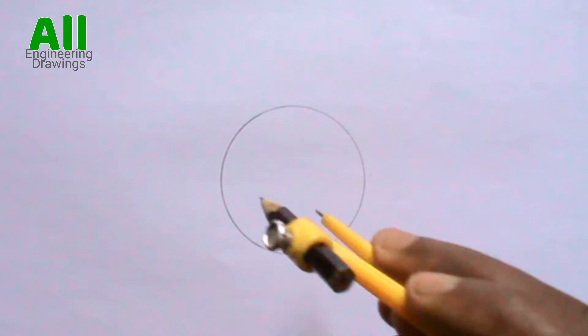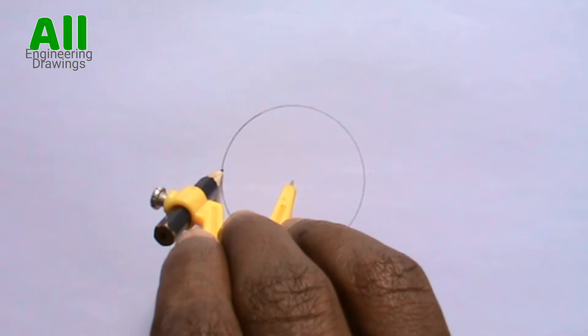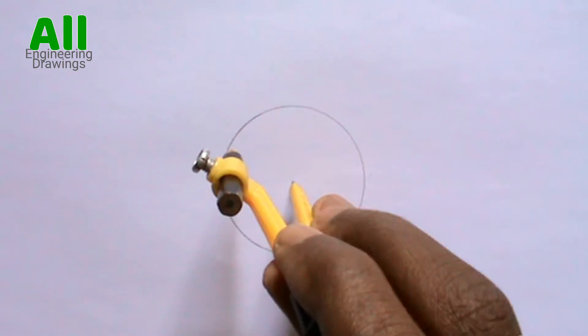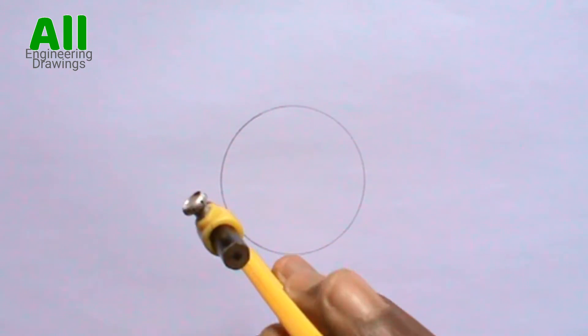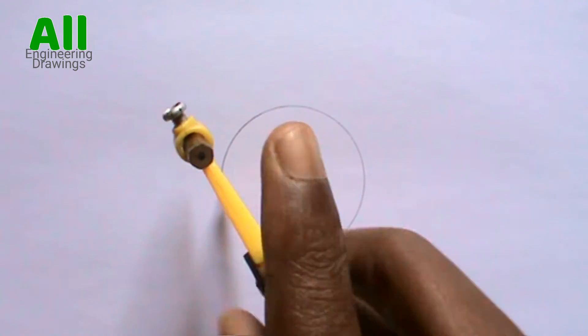After drawing your required circle, take the radius of the circle this way. Extend your compass to the radius of the circle, then step it on the circumference of your circle six times this way.